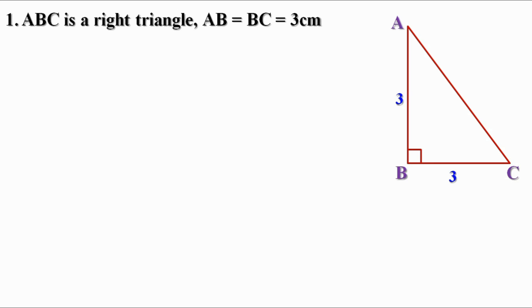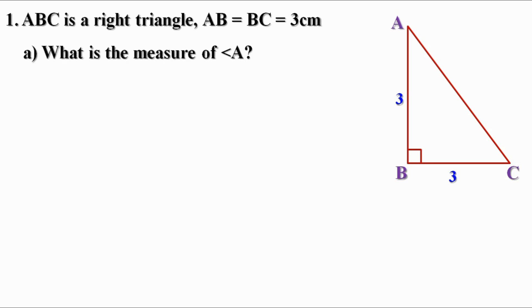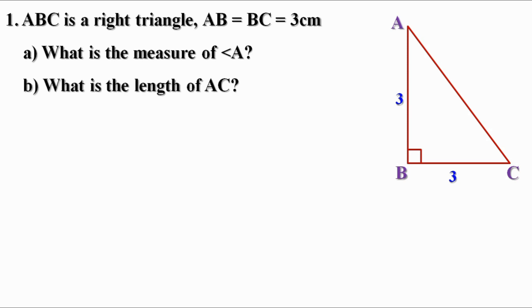First question. ABC is a right triangle. AB equal to BC equal to 3 cm. What is the measure of angle A? What is the length of AC?